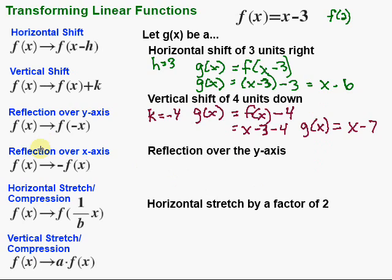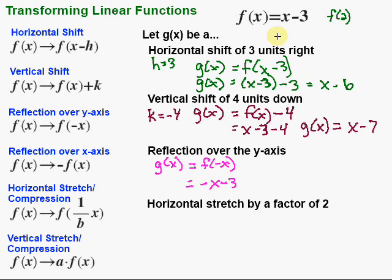Then let's take a look at a reflection over the y-axis. Same idea — we look for our recipe: f of x becomes f of negative x. So my g of x is going to be f of negative x. That means I'm going to take my function and replace every x with negative x. So this becomes: x is now negative x, giving us negative x minus 3. That's my g of x — no more simplification needed.